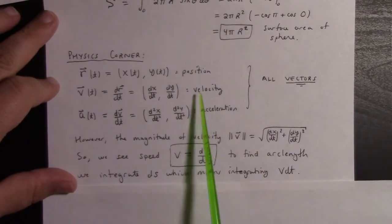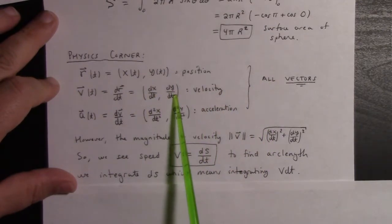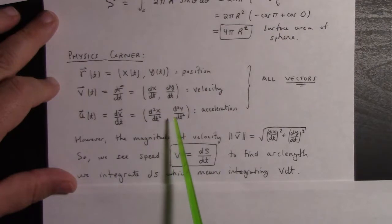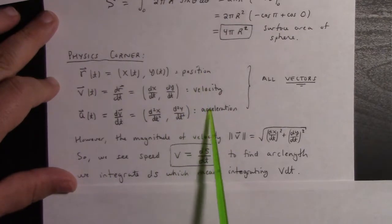Differentiating the path gives us a vector, which is the velocity vector: (dx/dt, dy/dt). Differentiating again gives us the acceleration: (d²x/dt², d²y/dt²). So we have position, velocity, acceleration. These are all vectors.